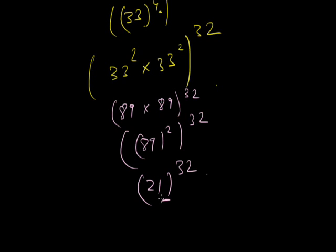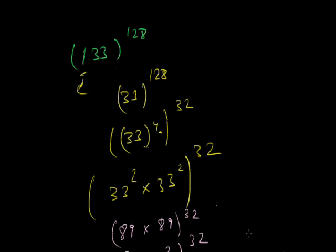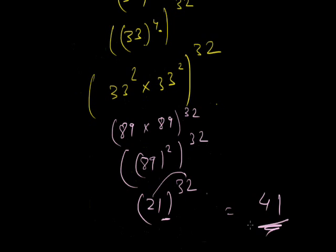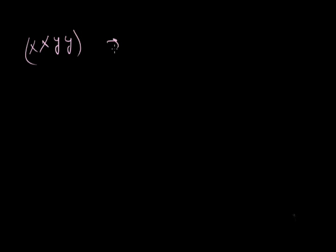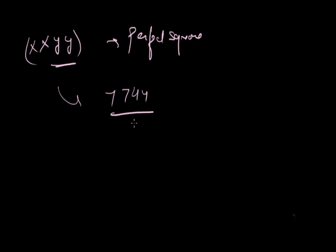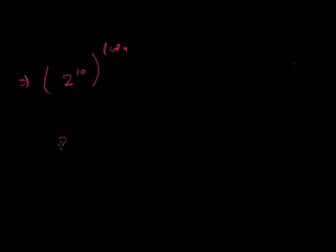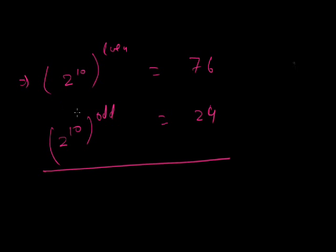With practice, you can solve these problems verbally without putting pen to paper. As a bonus point to remember: 2^10 raised to an even power ends with last two digits 76, while 2^10 raised to an odd power ends with last two digits 24. Keep this in mind to solve related problems quickly.